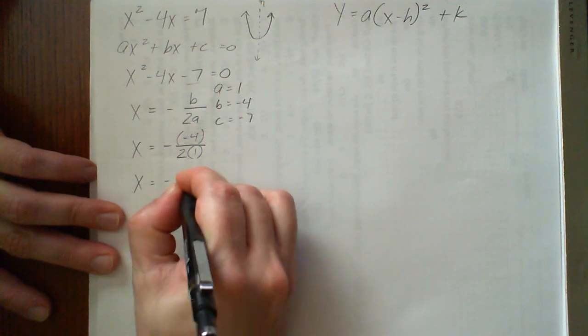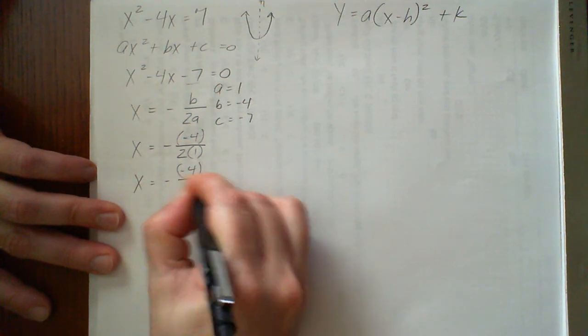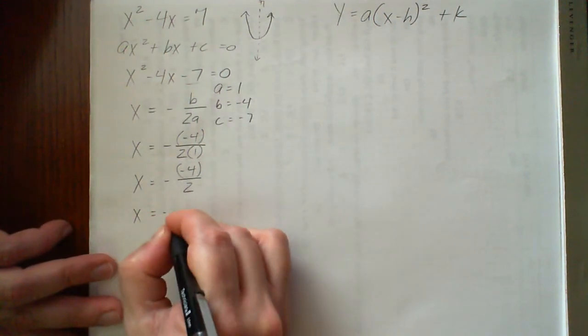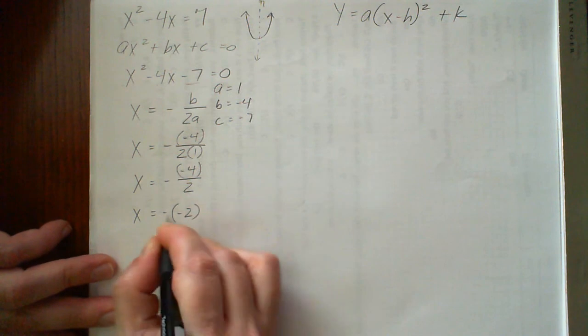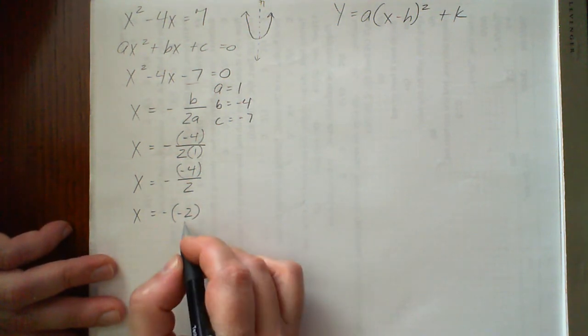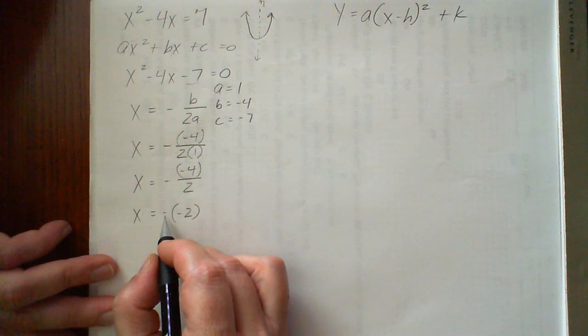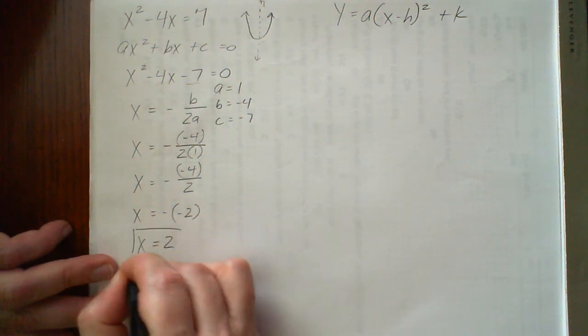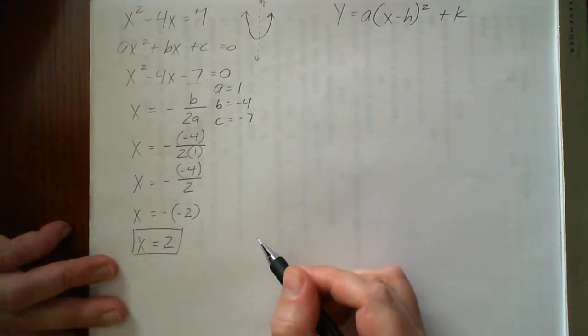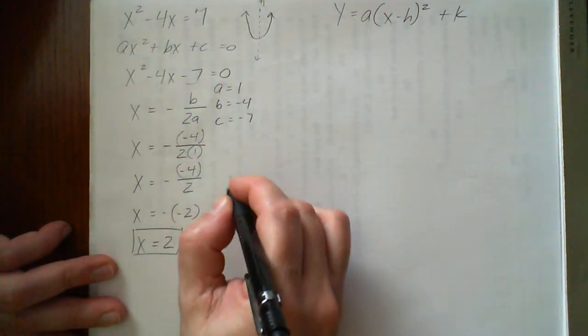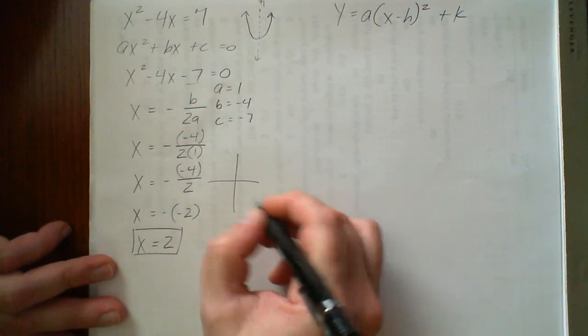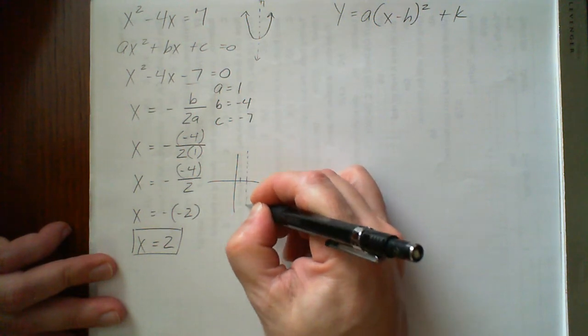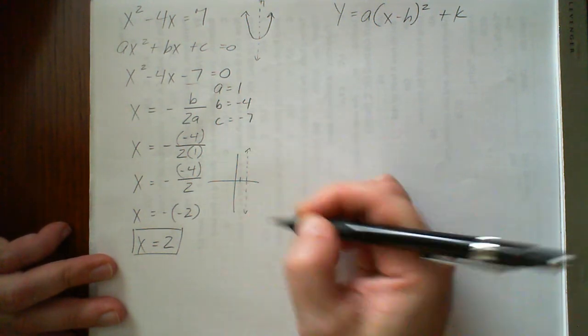And then continuing, 2 times 1 is 2. Negative 4 divided by 2 is negative 2. But you have a negative negative 2, which means the opposite of negative 2. Or you could consider it a negative 1 times negative 2. Either way, it's x equals 2. That's our axis of symmetry. So when we're thinking of it on a coordinate plane, if I have my x and y axis here, here's an x value of 2. x equals 2 is just a line going through that point 2 on the x axis.